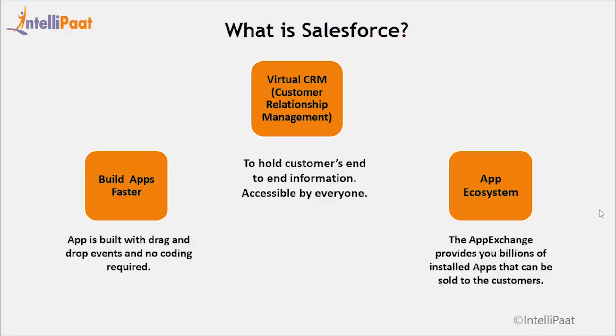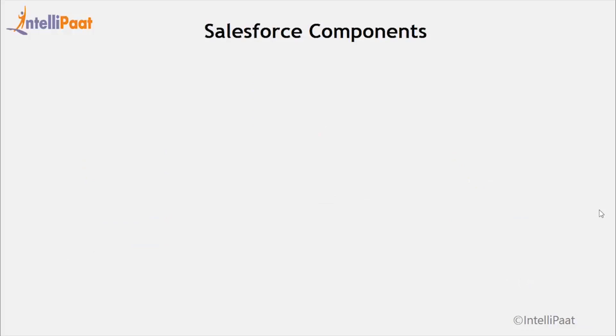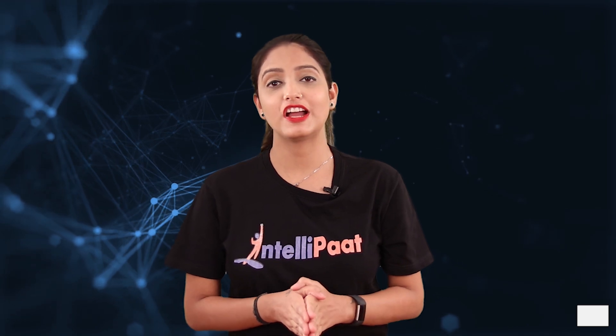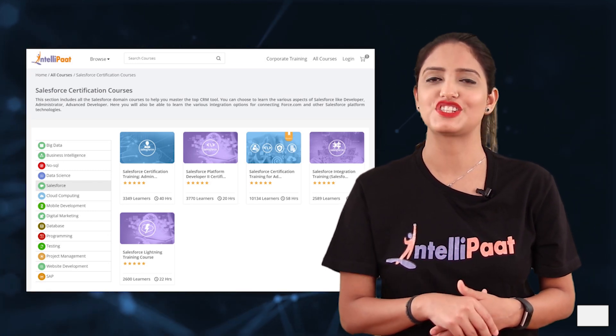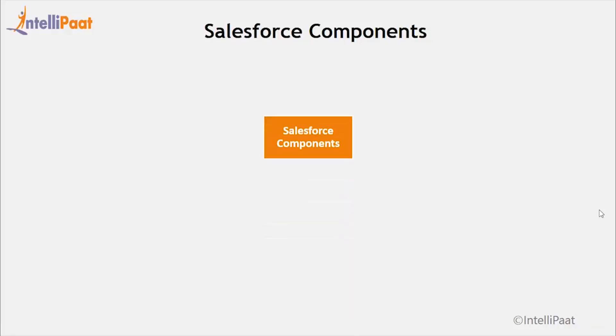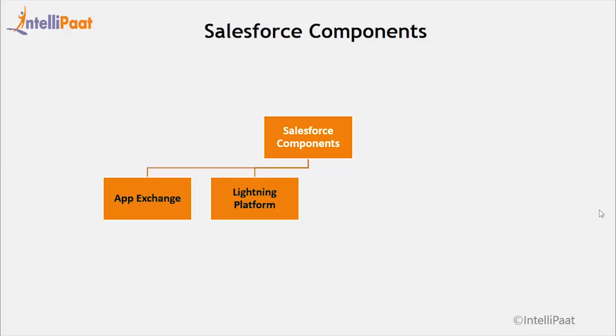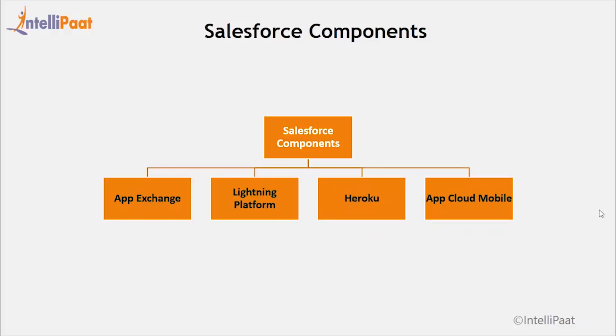After features, let us talk about the components Salesforce comes with. It has got majorly four components: first is App Exchange, then the Lightning Platform — which is what we are going to talk about — then we have got Heroku, and finally App Cloud Mobile. This was a general overview about Salesforce. Now let us go in detail about the Salesforce Lightning Platform, our main subject of the day.